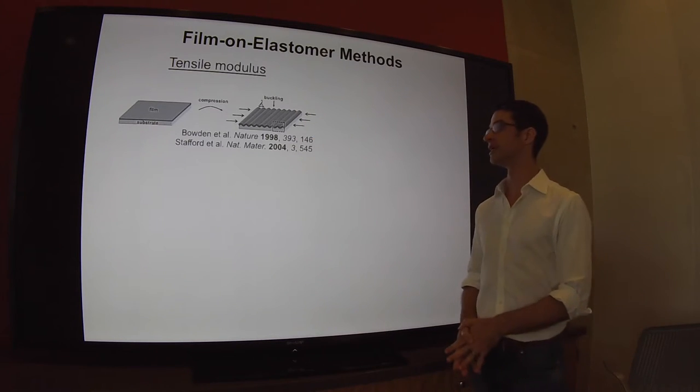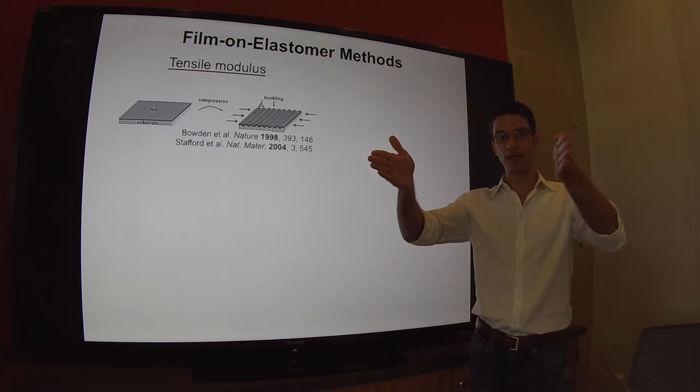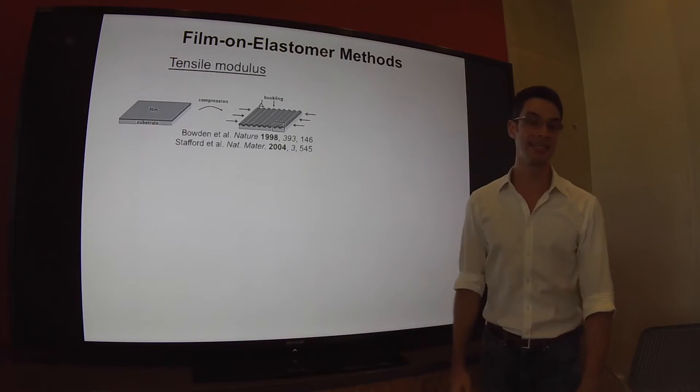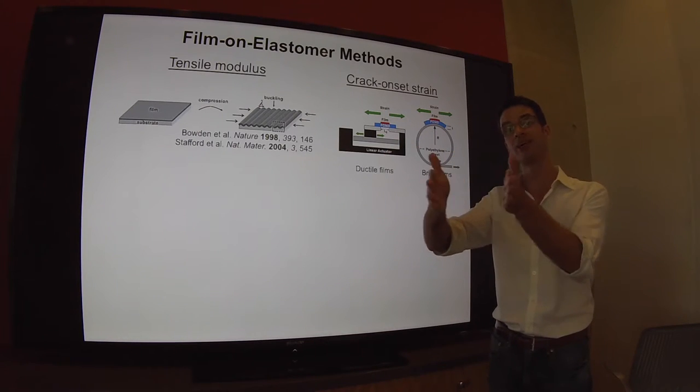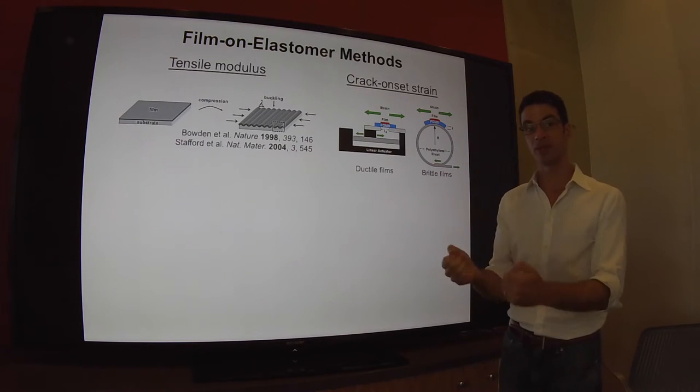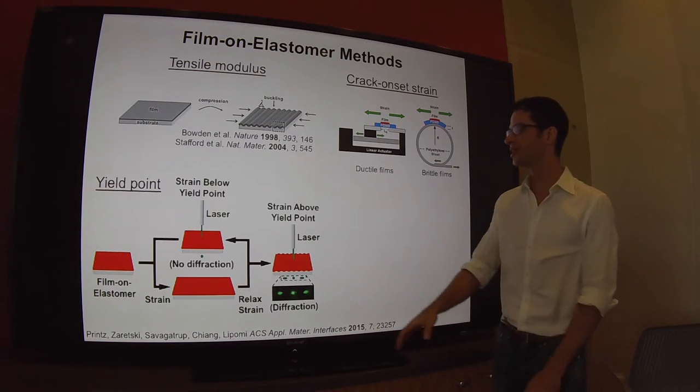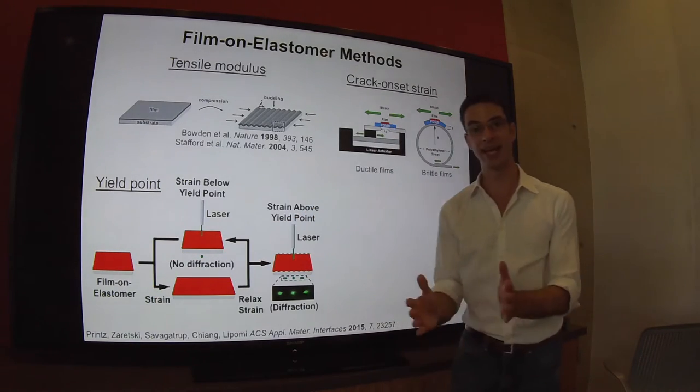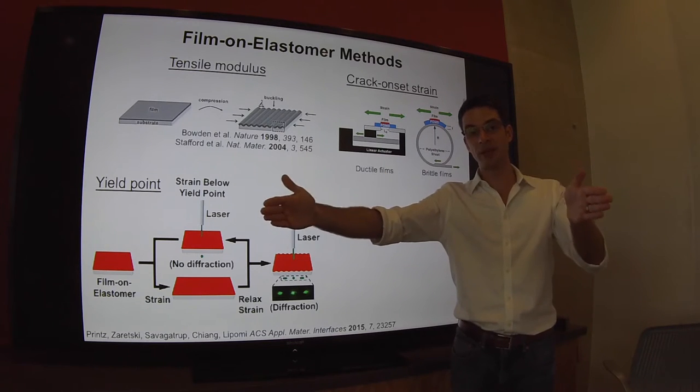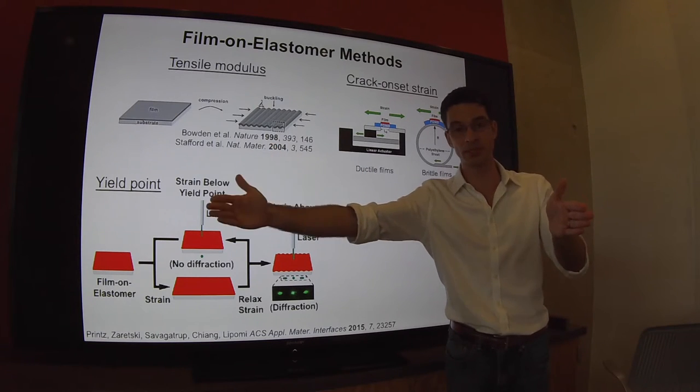You can measure the tensile modulus using this film-on-elastomer method where one compresses the film under a small tensile strain and converts the buckling wavelength and the film thickness into the tensile modulus. You can get the crack onset strain, which is a measure of brittleness, by putting the film either on a linear actuator or on a bendable substrate for the low strain regime and high strain regime.